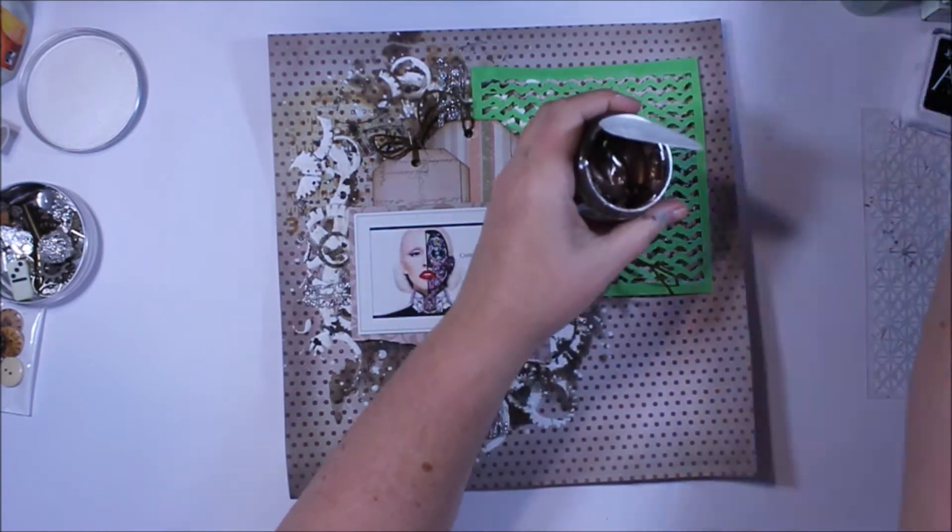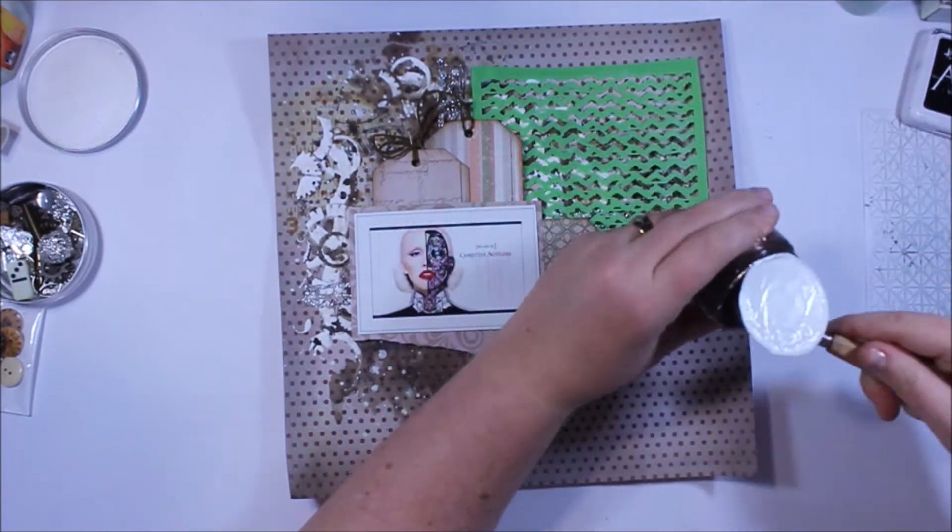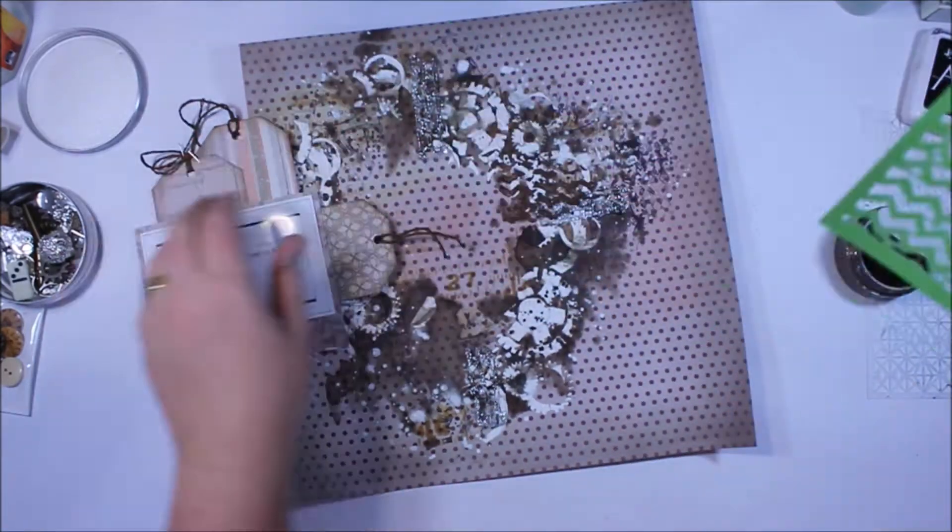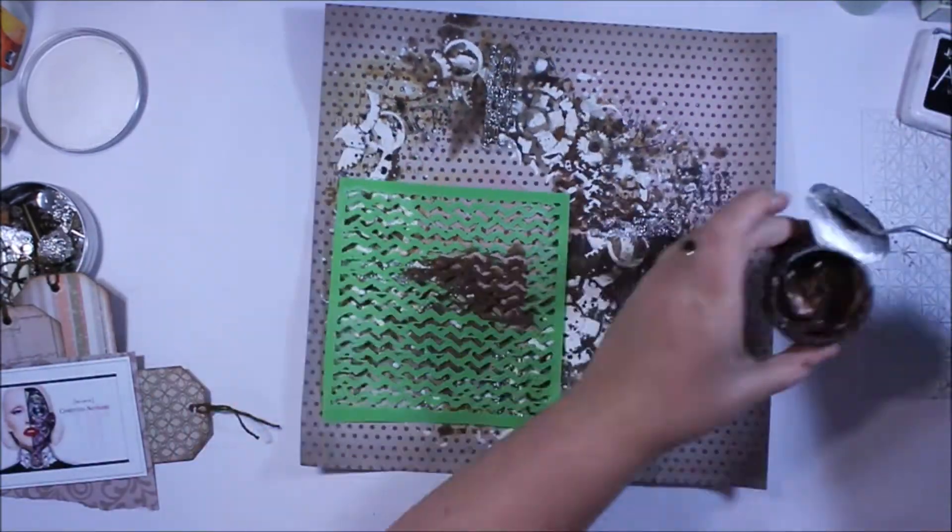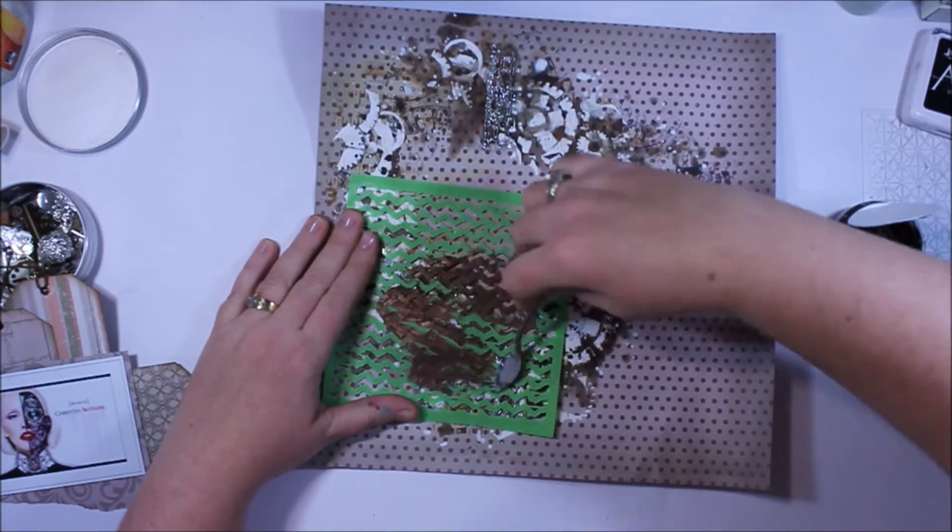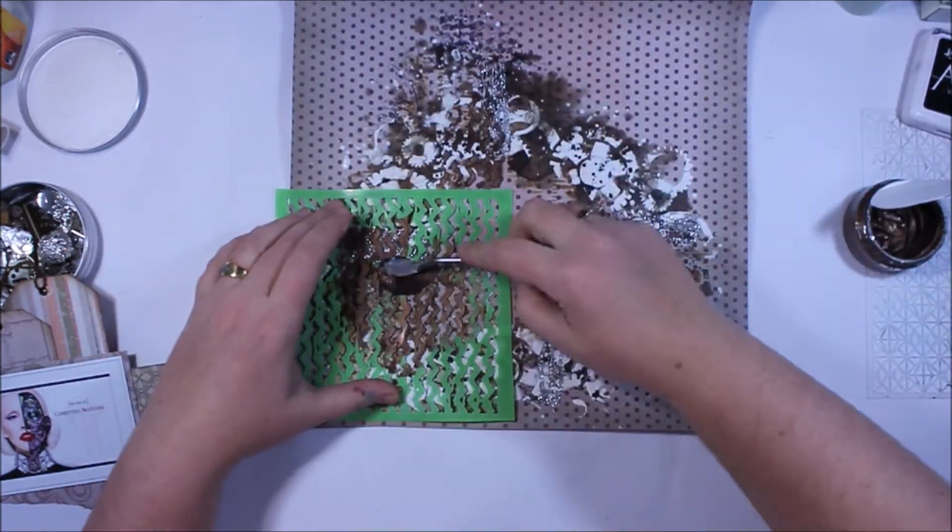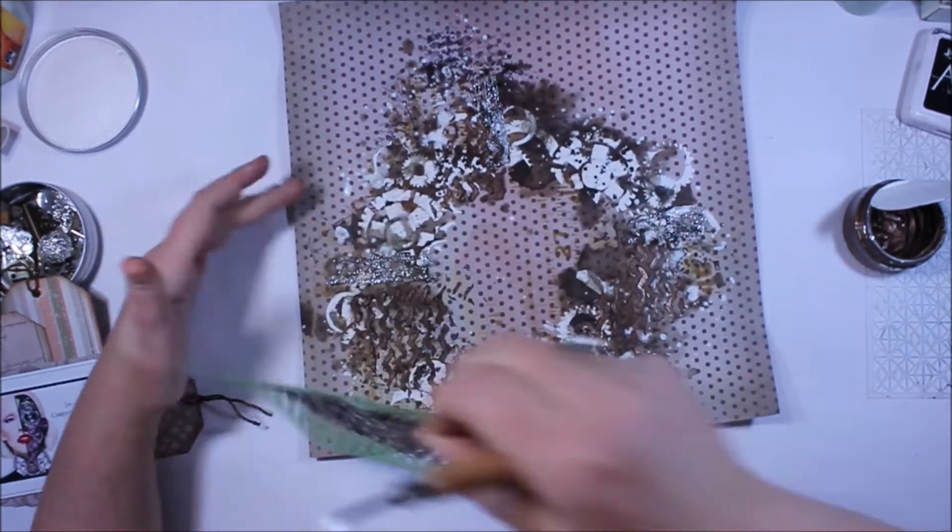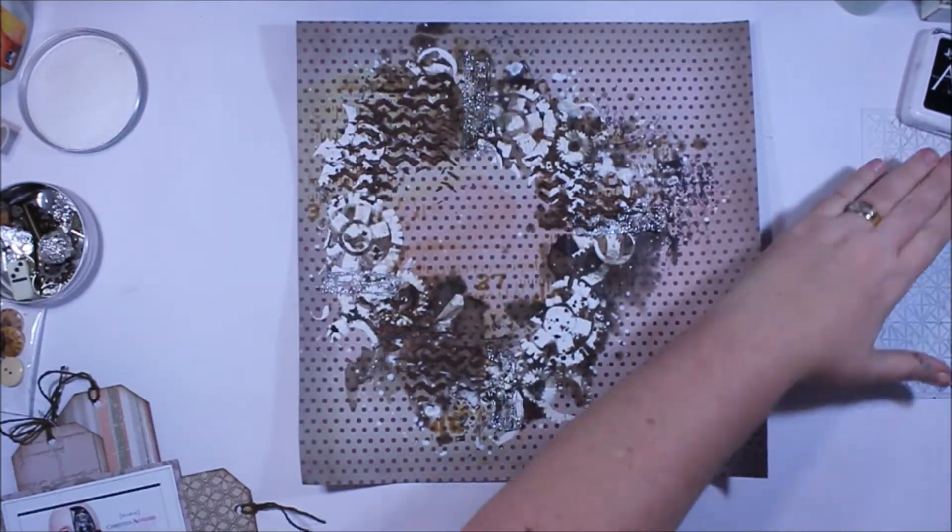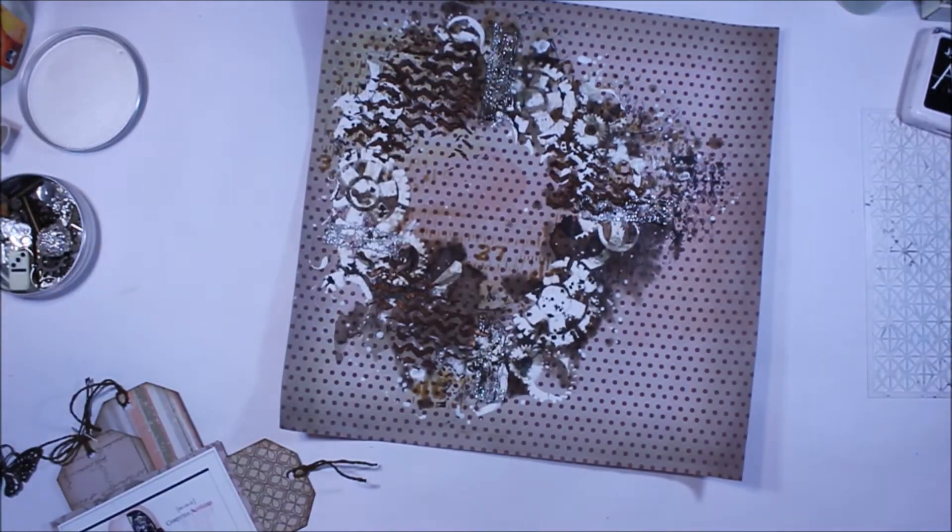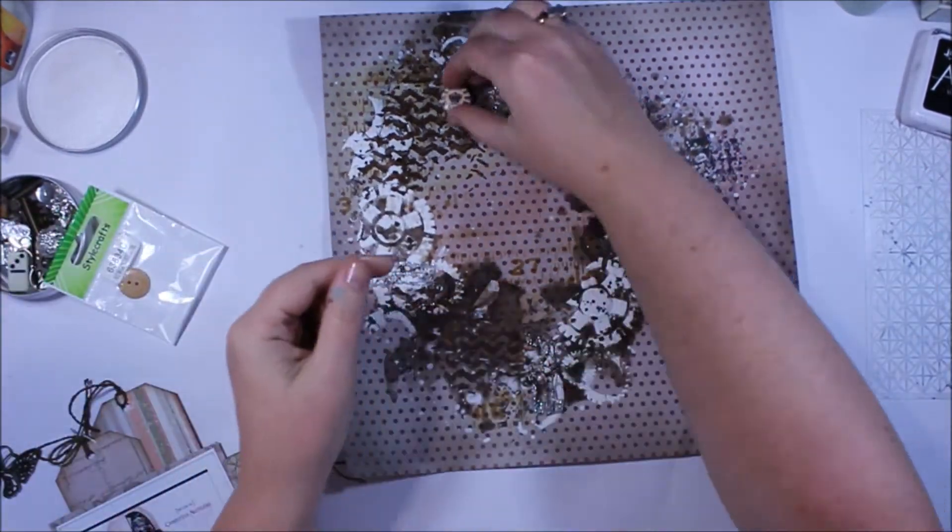So building my cluster and then deciding that my background does still need a little bit of extra something. So I'm adding some paste through a stencil. And again, this is very much messy mixed media. A lot of what you do gets covered up as you add elements. So essentially just keep working on the background until you're happy with the layout.